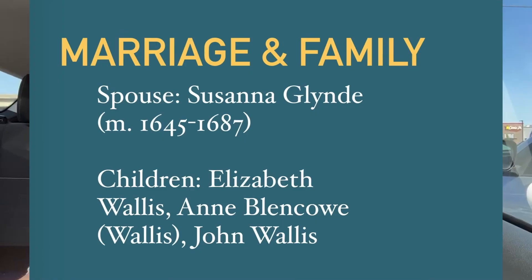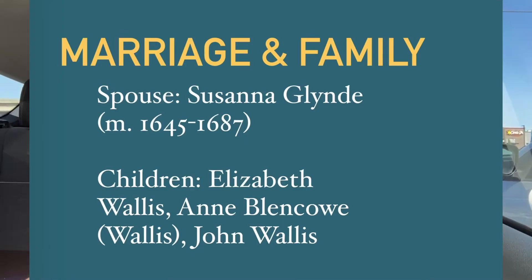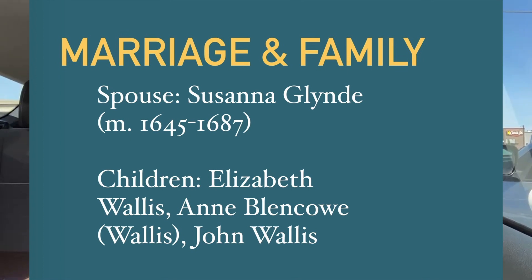John Wallace married Susanna Glynde in 1645, and they stayed married until she died in 1687. They had three children together: Elizabeth Wallace, Anne Wallace, who later married and became Anne Blencoe, and John Wallace.